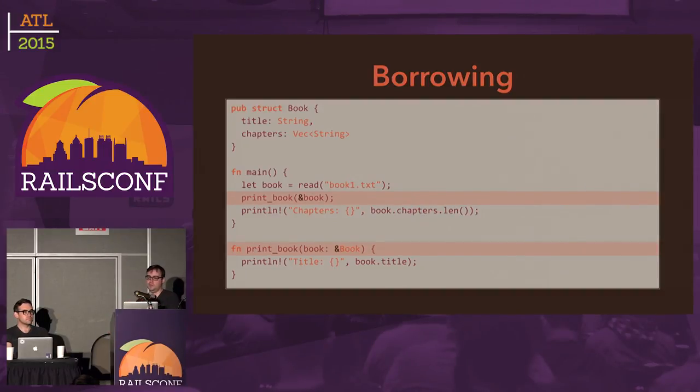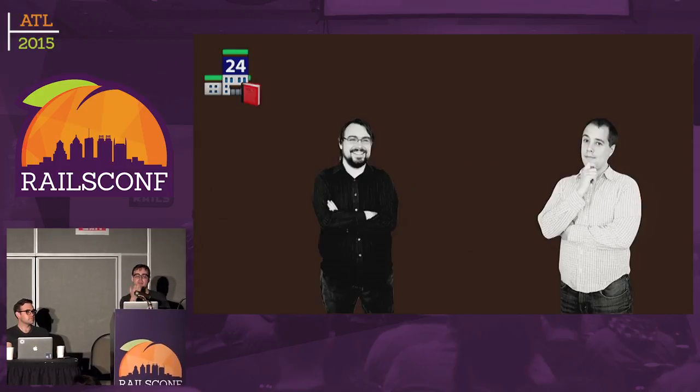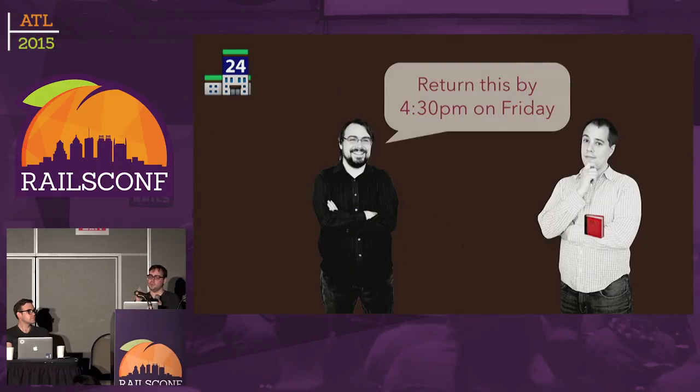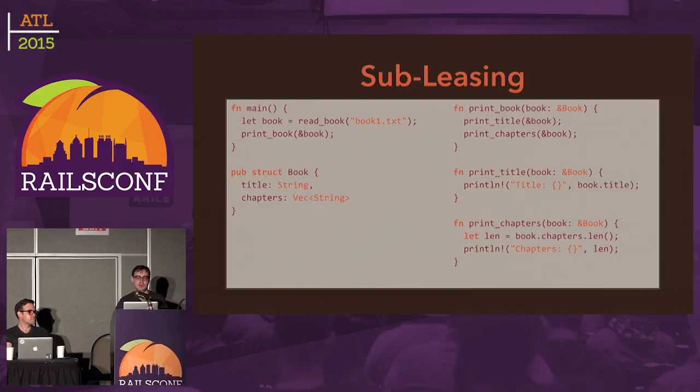There's one additional step: you can lend something that you borrowed to somebody else — we call that subleasing. The library lends me a book due by 5 p.m. Friday; Carl wants to borrow it, so I lend it to Carl due back to me by 4:30 p.m. Friday. Carl returns it to me, I return it to the library. In the real world, subleasing gets complicated because people are bad at honoring leases. But in the programming world, the compiler can enforce it for us.